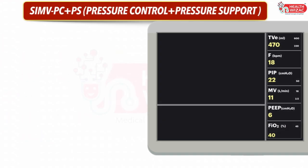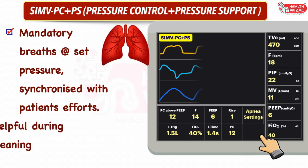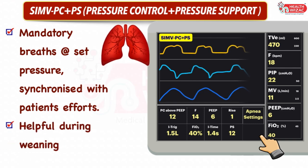Next is SIMV pressure control plus pressure support mode. In this mode we have to set PC above PEEP, frequency, PEEP, rise time, inspiratory trigger, FiO2, inspiratory time, pressure support settings, and apnea settings for backup ventilation. In this mode, the ventilator delivers mandatory breaths at set pressure which are synchronized with the patient's spontaneous efforts.